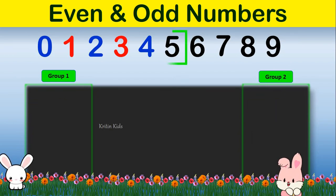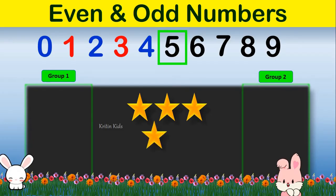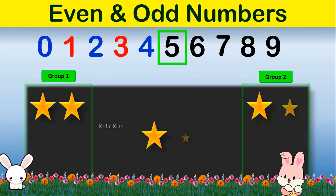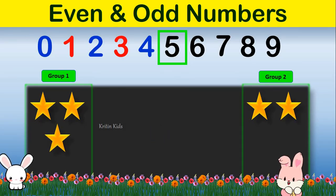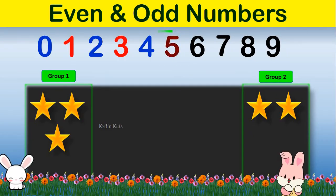Now let us go for the next number, number 5. You can see the 2 groups are having different number of items: one has 3 and one has 2, meaning both are not having equal number of items. So number 5 is an odd number.